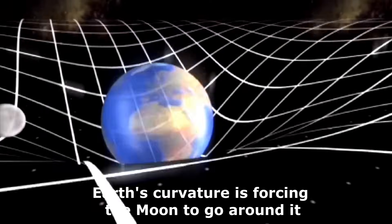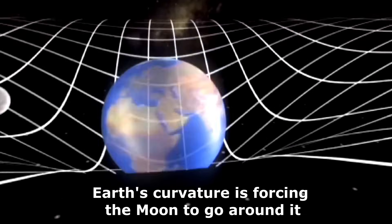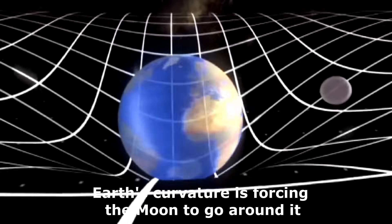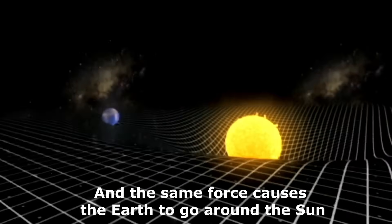As we see here, Earth's curvature is forcing the moon to go around it. And the same force causes the earth to go around the sun.